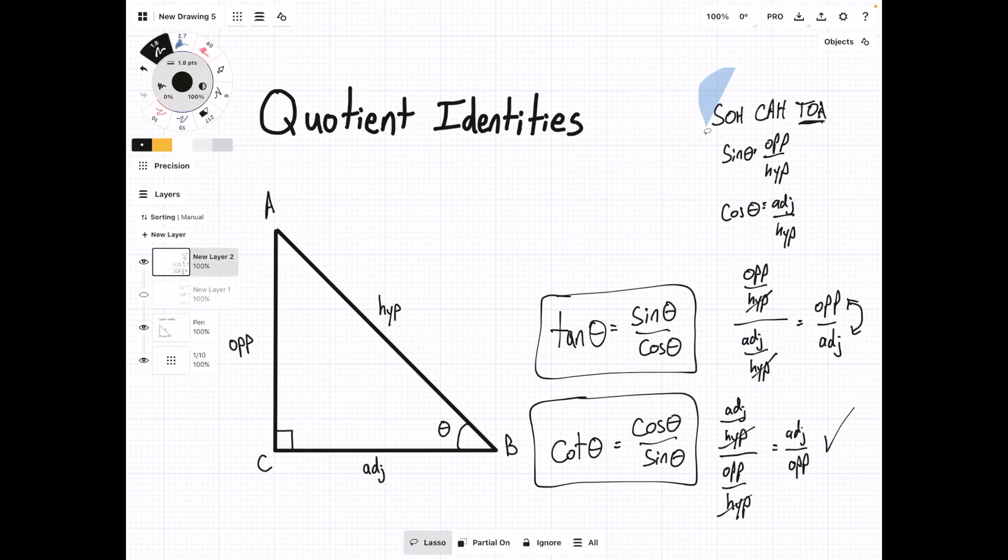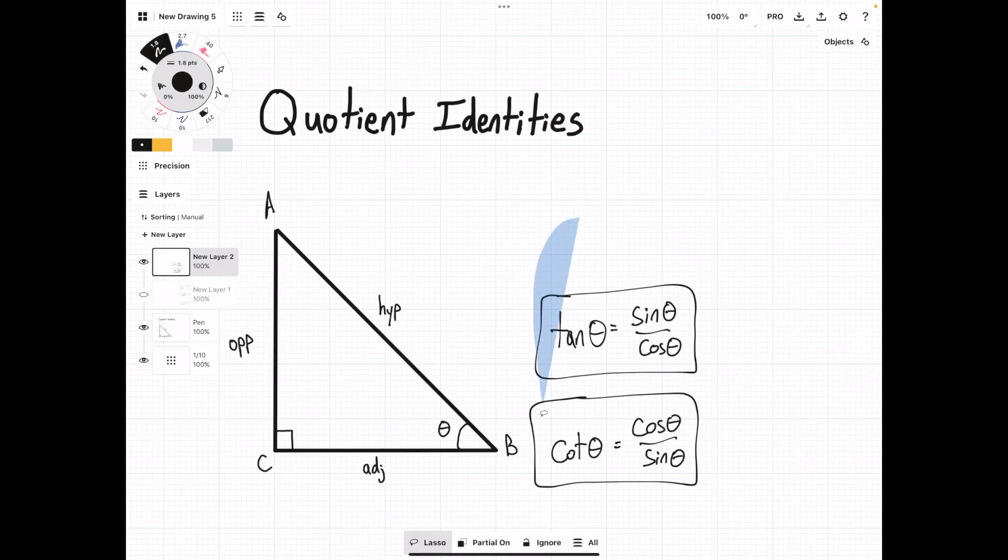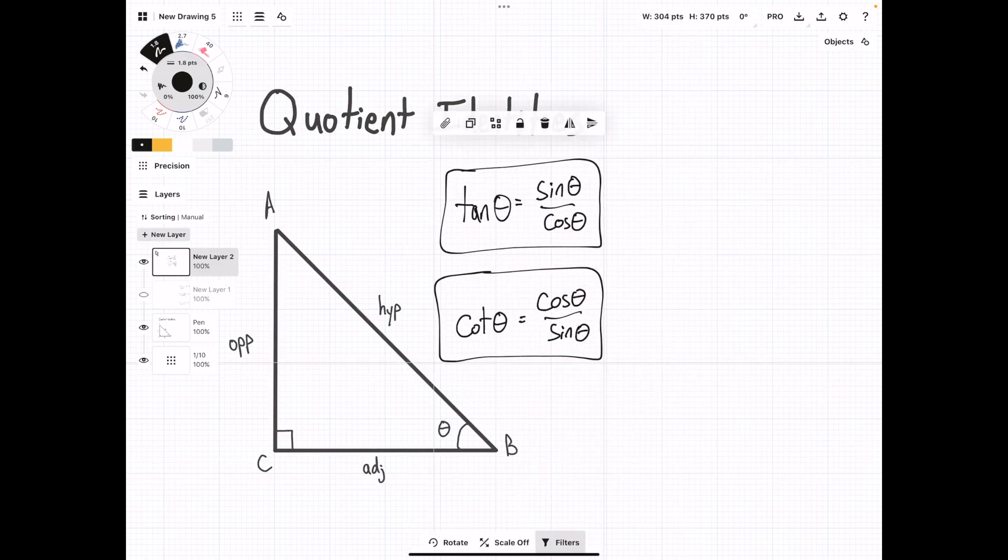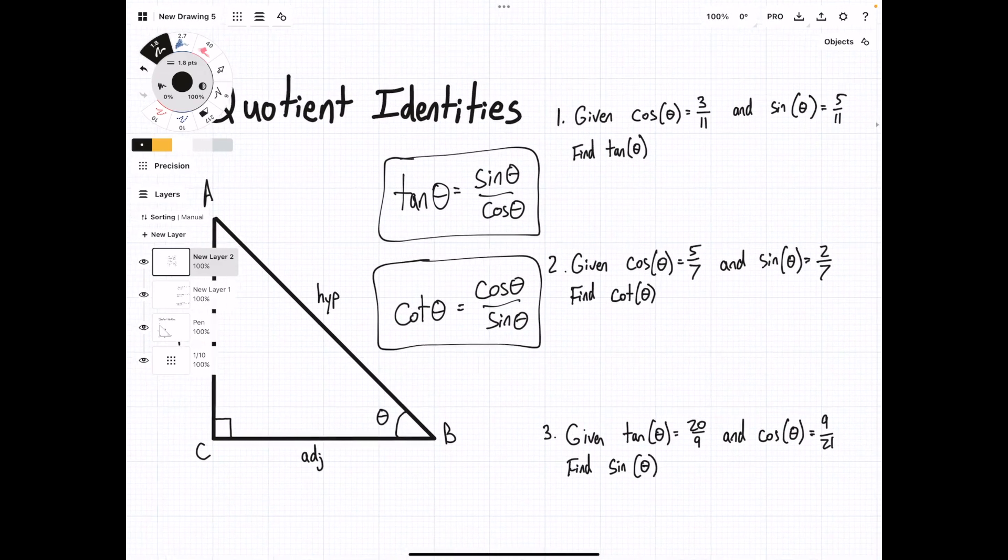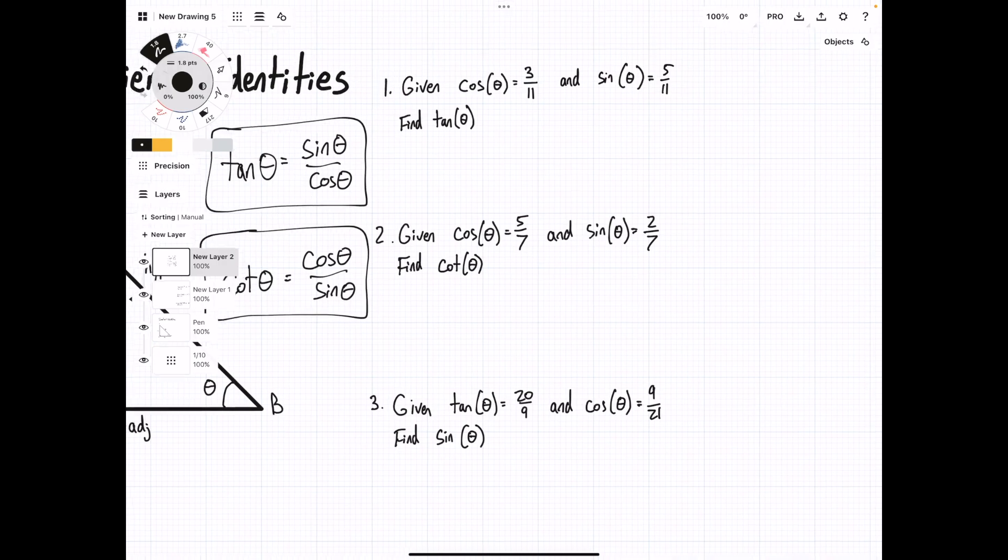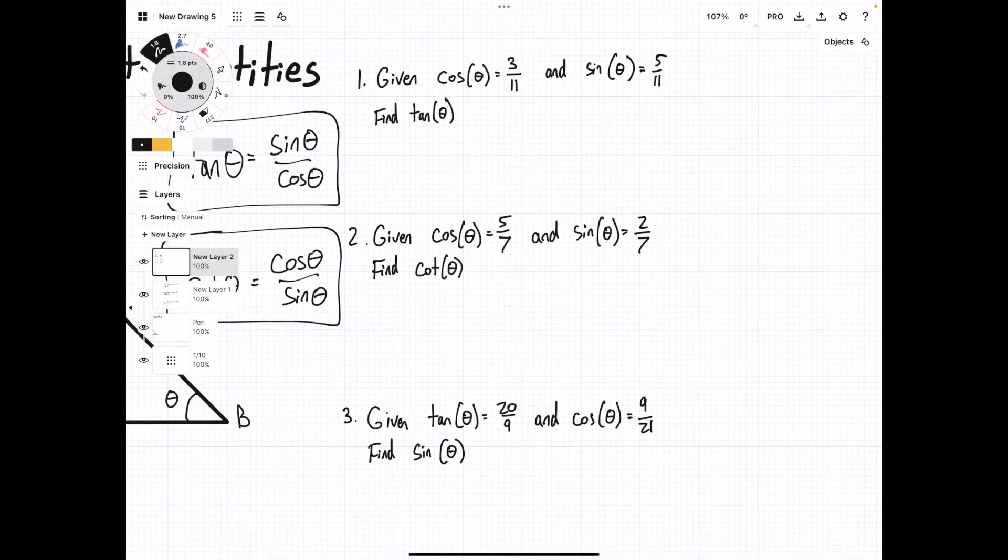Now we're going to run through a couple practice problems using this quotient rule. For the first one, given cos θ equals 3/11 and sin θ equals 5/11, find tan θ.